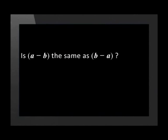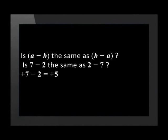Think about this: is a minus b the same as b minus a? Think about this — is 7 minus 2 the same as 2 minus 7? Well, 7 minus 2 is equal to 5, and 2 minus 7 is equal to minus 5. The numbers are the same but their signs are different.